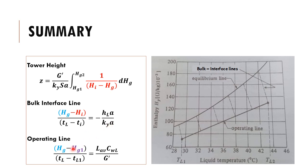From the operating line equation, knowing the bottom conditions, you can draw the operating line with gradient L·CW / G-dash, and for any liquid temperature TL at a point in the tower, you can read off the corresponding humid enthalpy HG of the air at that point.